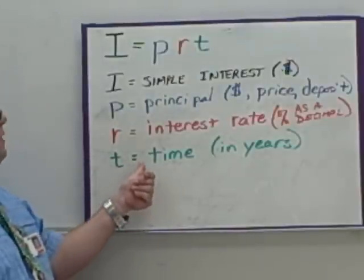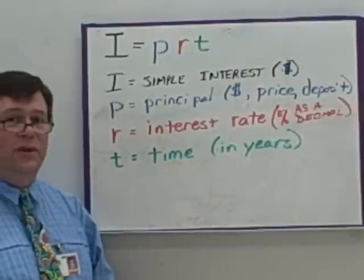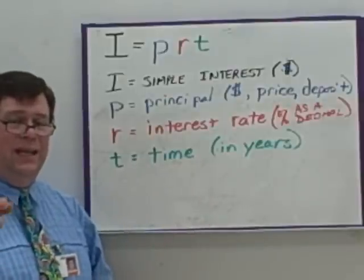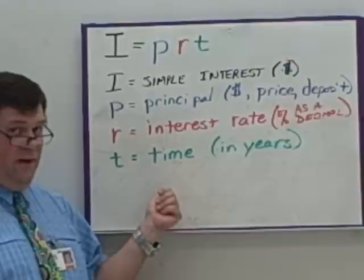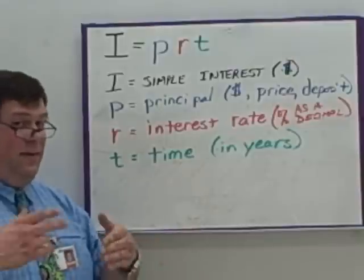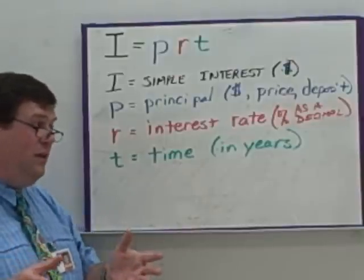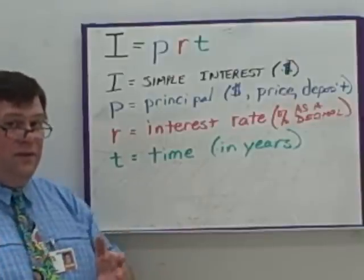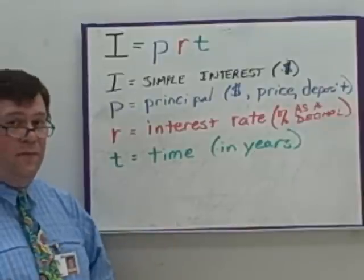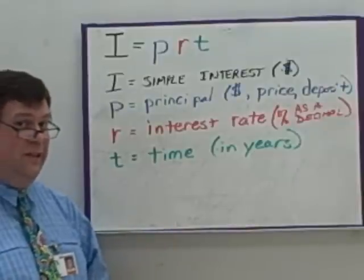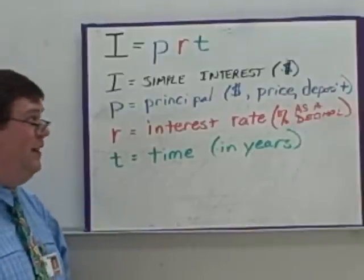T is equal to time. The time must always be in years in the formula. They may not give you years in your question, so you'll have to either convert to years or work with a fraction. We'll work with one of those a little bit later.